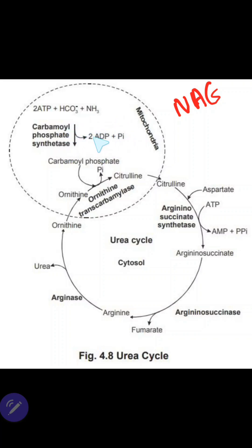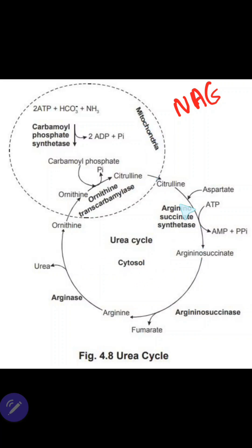In the second reaction, the carbamyl group from carbamyl phosphate is transferred to ornithine in the presence of ornithine transcarbamylase enzyme, resulting in the synthesis of citrulline. This step also occurs in the mitochondria. All remaining steps of the urea cycle occur in the cytosol.